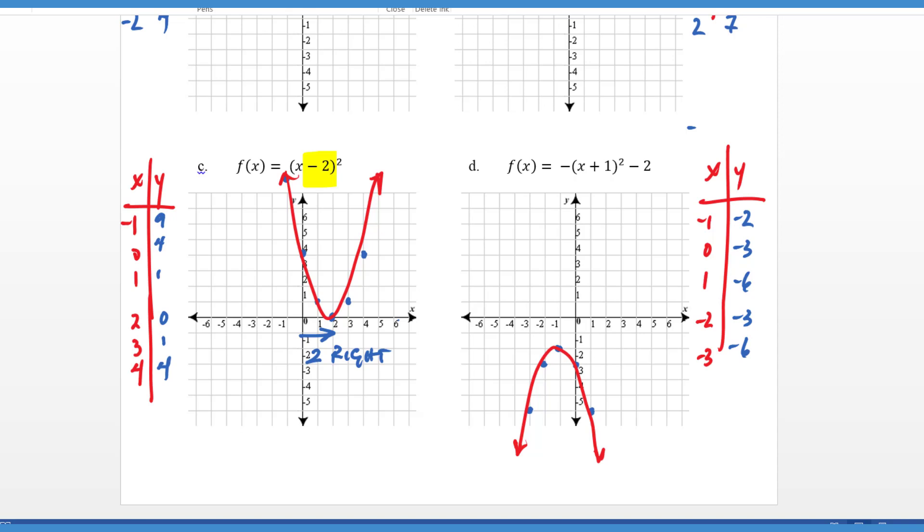Now in part D, we wanted to see if you could kind of put all this together. We have a negative a value, so that's a negative one. That's going to tell us it's going to reflect. Then we also have an h and a k value. And so you can see we're coming over one, down two, and then we've also reflected the graph to get the resulting transformation. So work on that. Also check those in your calculator. That'll give you great practice graphing these in your calculator. If you have any questions about how to do that, be sure to ask in class.